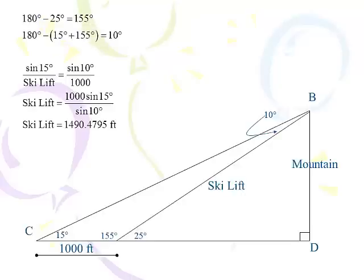So, the sine of 15 degrees over the ski lift is equal to the sine of 10 degrees over 1,000. You cross multiply, you divide, and the ski lift is 1,490.5 feet. You would report it as 1,490.5, but we're going to end up using that length, that ski lift, in the second calculation in order to find the height of the mountain. And you want to use the ski lift in all of it, with all of its decimals.